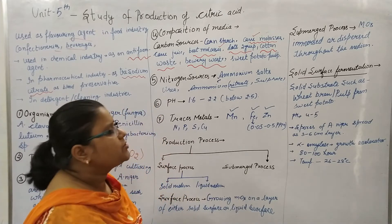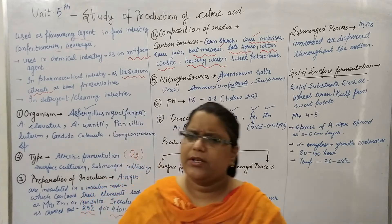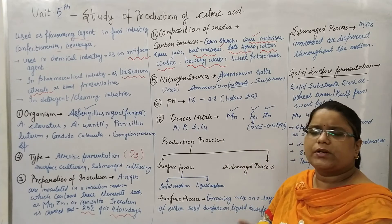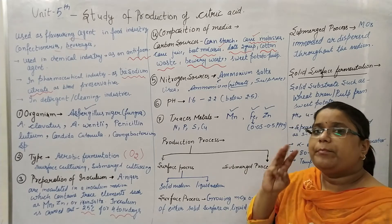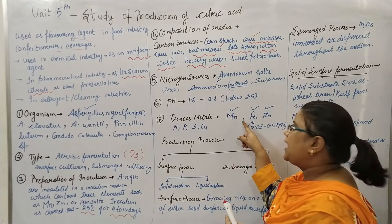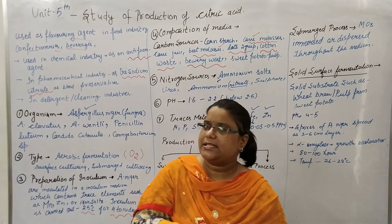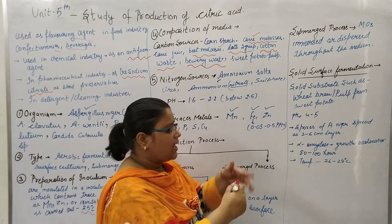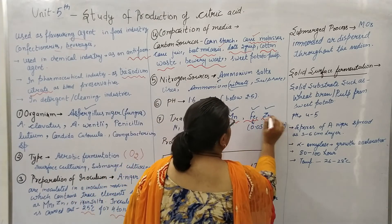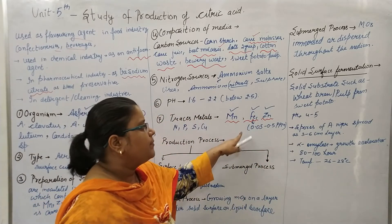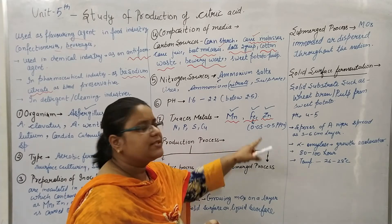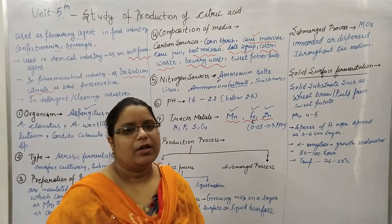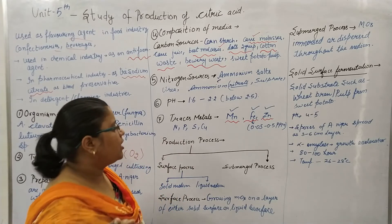The pH must be maintained below 2.5, specifically 1.6 to 2.2. Different trace elements are used, including nitrogen, phosphorus, sulfur, and copper, but the three most important trace elements are manganese, iron, and zinc. In the presence of manganese, iron, and zinc, the citric acid yield increases significantly. The iron concentration is around 0.05 to 0.5 ppm (parts per million).